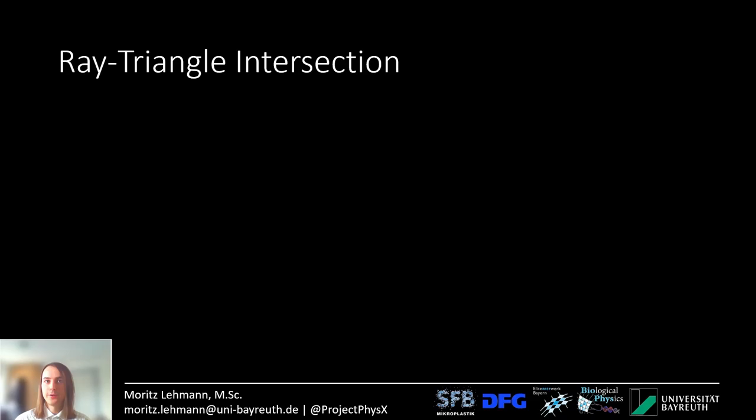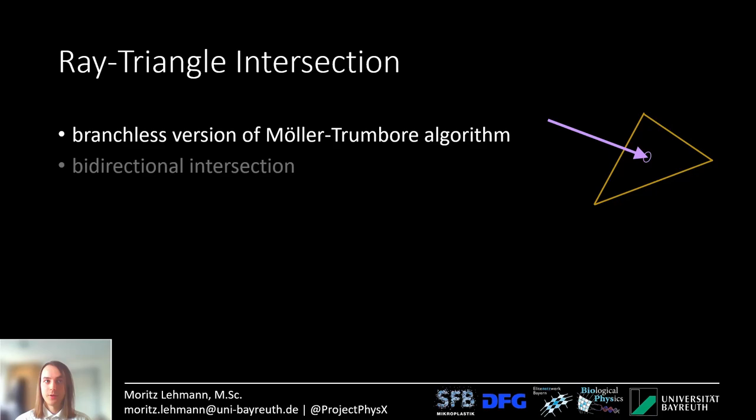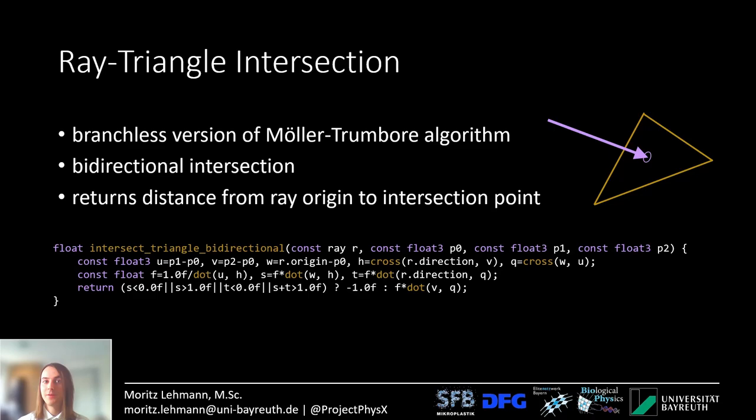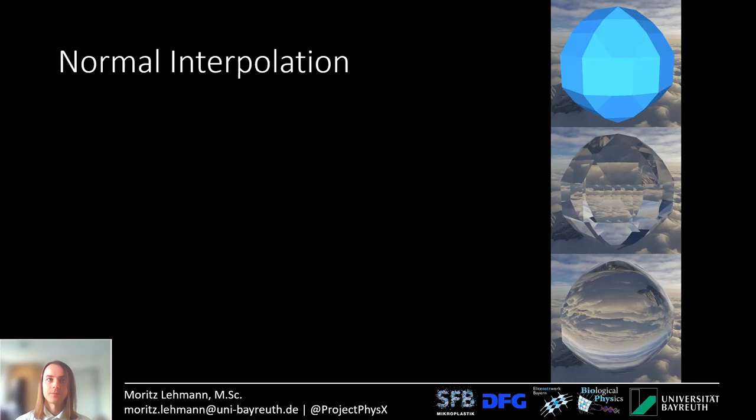For the ray-triangle intersection I use a branchless version of the Möller-Trumbore algorithm. I implemented it for bidirectional intersection and it returns the distance from the ray origin to the intersection point. Here's the algorithm implemented in OpenCL — it's only five lines of code: two cross products and four dot products.